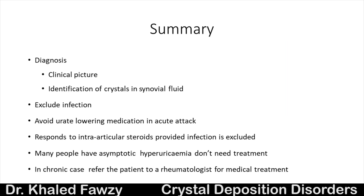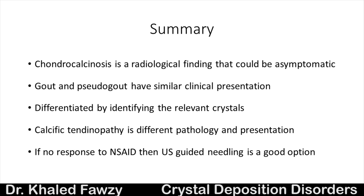In summary: for gout, diagnosis requires the classic clinical picture and crystal identification in synovial fluid. Always exclude infection before injecting steroids. Avoid urate-lowering drugs like allopurinol during an acute attack. Many hyperuricemic patients are asymptomatic; in chronic cases, refer to a rheumatologist. Chondrocalcinosis is a radiological finding that may be asymptomatic. Attacks of pseudogout and gout are clinically similar — differentiation depends on crystal identification. In the shoulder, calcific tendinopathy involves hydroxyapatite deposited in the tendon, not the joint, and ultrasound-guided needling is an excellent option if NSAIDs fail.